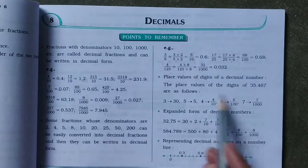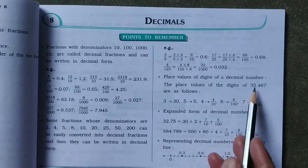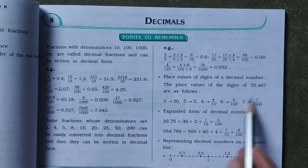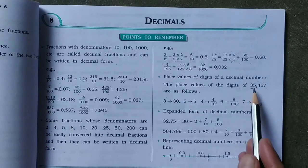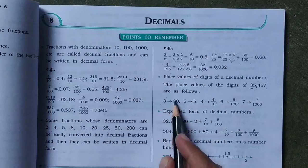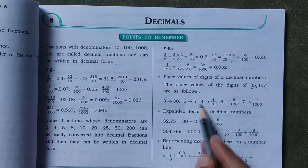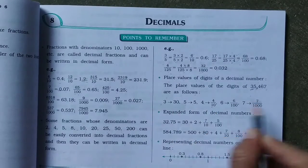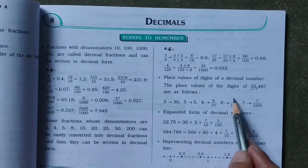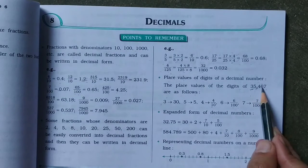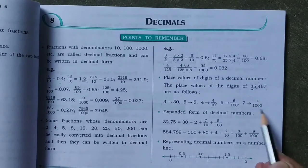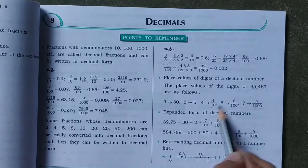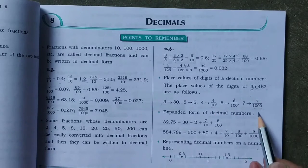Place value of digits of a decimal number. For 35.467: 3 is in tens place (30), 5 is in ones place (5), 4 is in tenths place (4 by 10), 6 is in hundredths place (6 by 100), 7 is in thousandths place (7 by 1000).